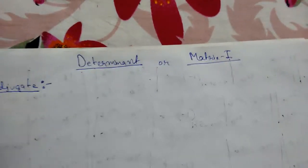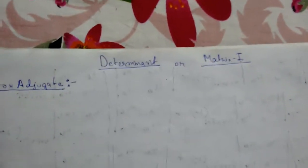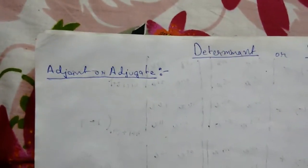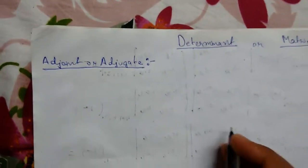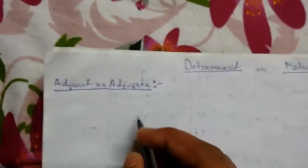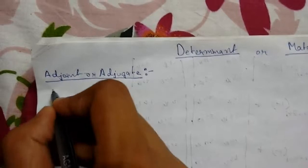Welcome back guys. Today we will be learning about determinants. Specifically, today we will be learning about the adjoint or adjugate of a determinant. So let me define it.